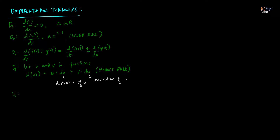The fifth formula is the quotient rule. If u and v are functions of any variable, the derivative of u over v equals v times du minus u times dv, all over v squared. We use this formula whenever we are differentiating the quotient of two functions. These are the first set of differentiation formulas that you must memorize.